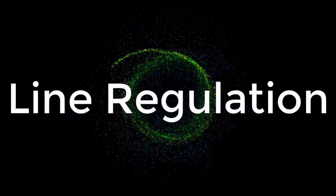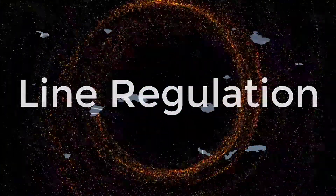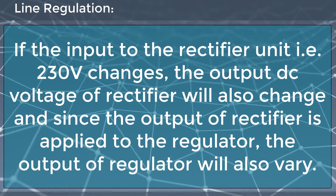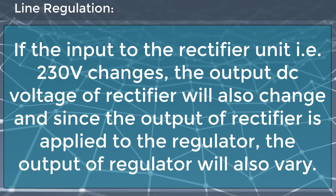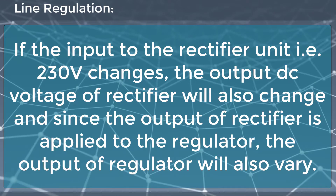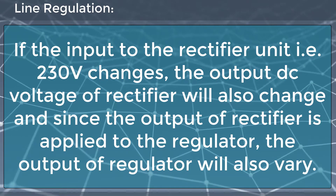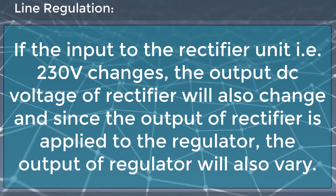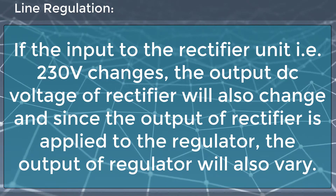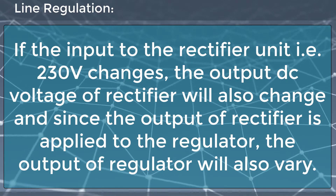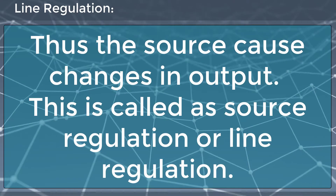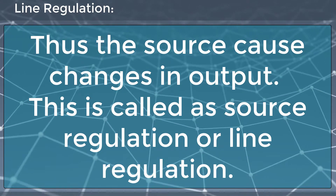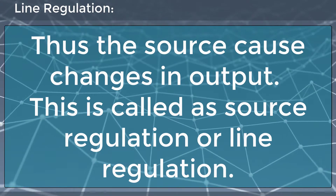Now let's look into line regulation. If the input to the rectifier unit — that is 230 volts — changes, the output DC voltage of the rectifier will also change. Since the output of the rectifier is applied to the regulator, the output of the regulator will also vary. Thus, the source causes changes in output. This is called source regulation or line regulation.